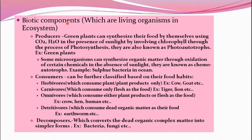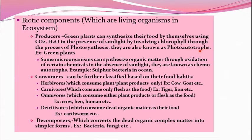Biotic components — living organisms in the ecosystem — are classified as producers, consumers, and decomposers. Producers are mostly green plants. They synthesize their food using carbon dioxide and water in the presence of sunlight, involving chlorophyll, through the process called photosynthesis. They are also called photo-autotrophs, as 'auto' means by themselves and 'trophos' is a Greek word meaning nourishment, 'photo' meaning in the presence of sunlight.